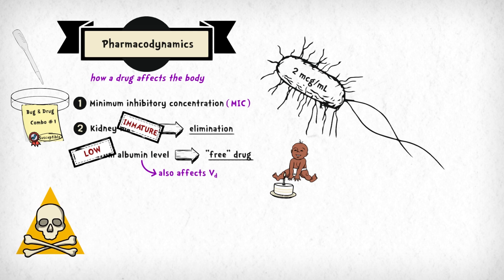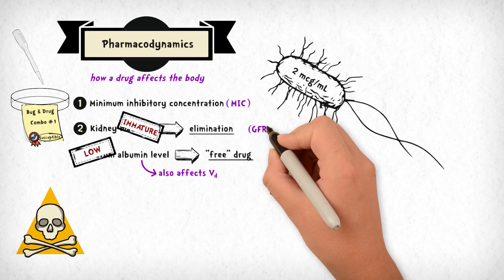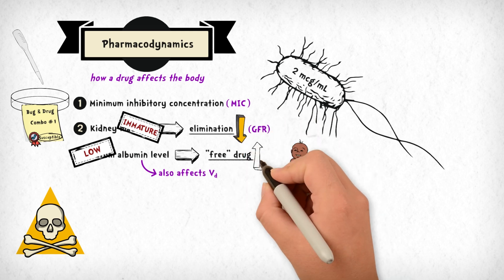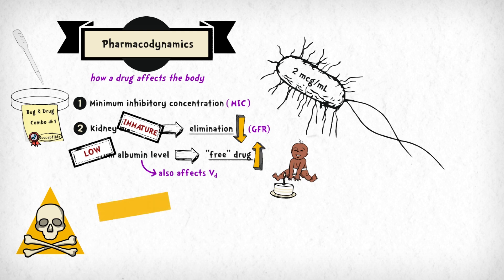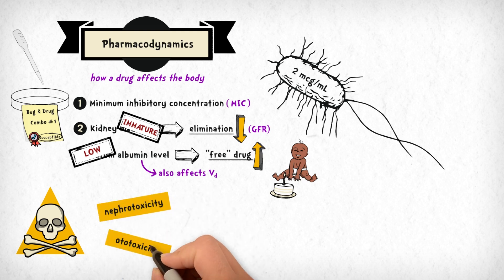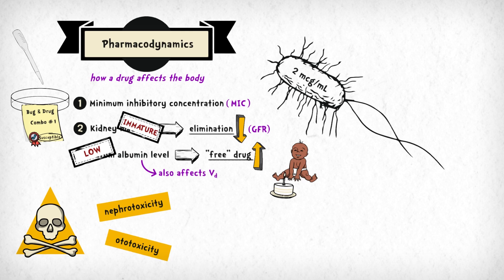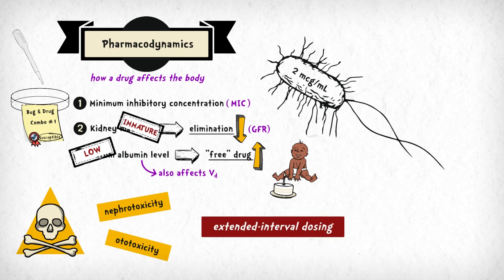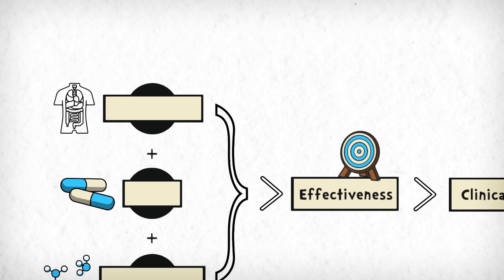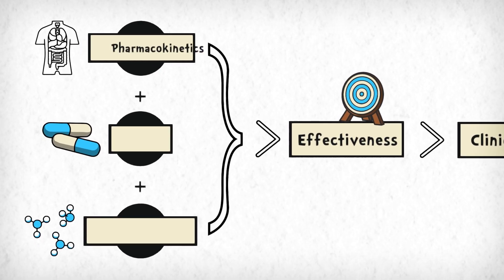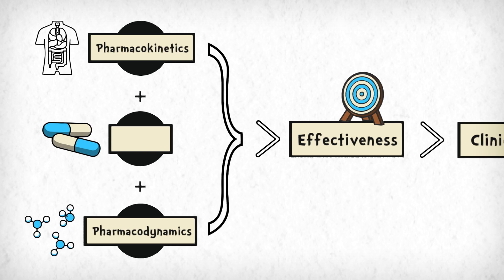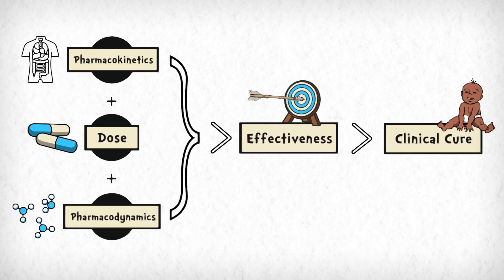Gentamicin elimination is mediated by the glomerular filtration rate, and decreased elimination with accumulation of free drug in the tissues can cause nephrotoxicity and ototoxicity. This is why we utilize extended interval dosing for gentamicin in neonates. By monitoring serum levels and optimizing our dosing strategy, we can decrease the risk of side effects, increase bactericidal efficacy, and ultimately improve clinical outcomes.